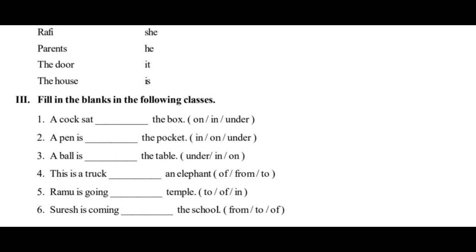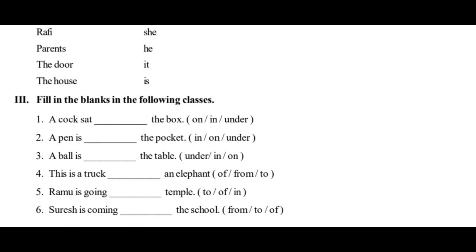Second one: 'A pen is in the pocket.' The pen is inside the pocket, so 'in' is the right answer. Third one: 'A ball is dash the table.' Usually a ball is under the table, so the answer is under. A ball is under the table. Fourth one: 'This is a trunk of an elephant.' Trunk means thondam — the elephant's trunk. 'Of' is the right preposition.